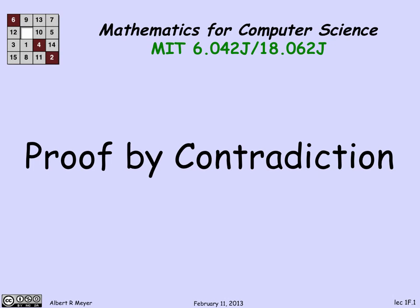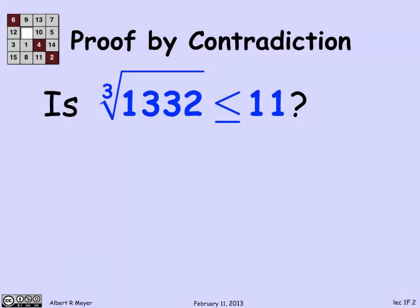So let's do an example first to see what's going on. Suppose that I wanted to prove that the cube root of 1,332 was less than or equal to 11. Or more precisely, suppose I didn't know, and I'm asking this question: is the cube root of 1,332 less than or equal to 11? One way to do it would be to simply compute the cube root of 1,332, which is a small bother, but manageable.